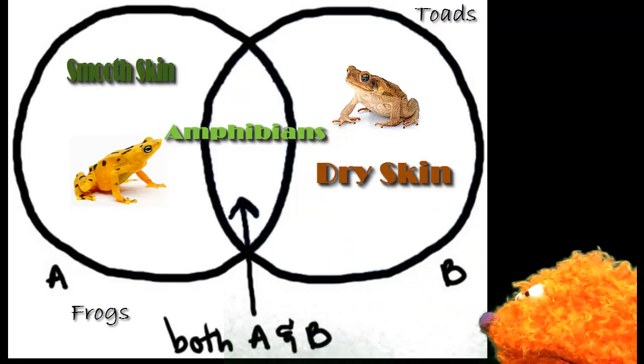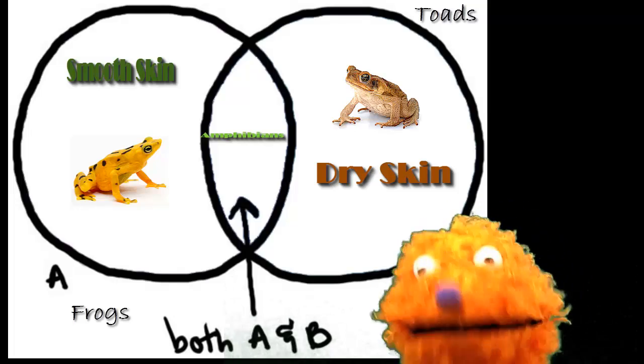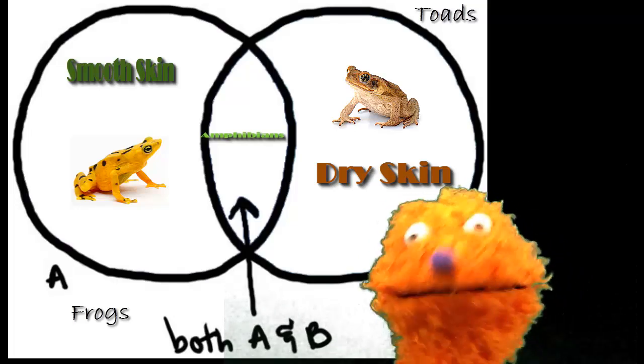What if it belongs to both of them? Yep, you're gonna put it in that shared space between the two circles where they overlap. It's a good way to kind of see what we know.